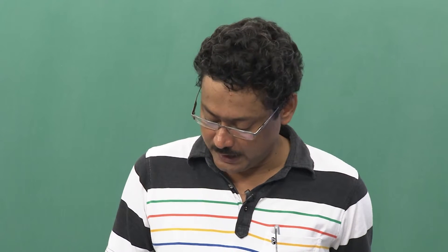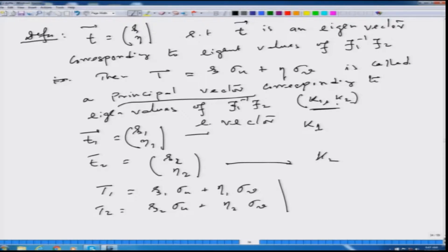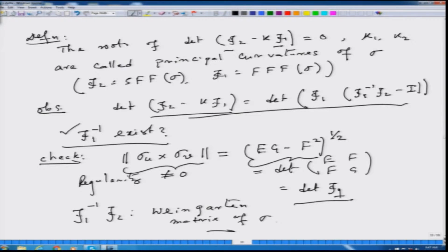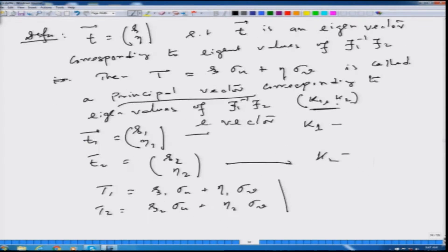Let us continue where we stopped in the last lecture. We have defined the principal vectors and the principal curvature. Remember k1 and k2 — these were the roots. They are called the principal curvatures, the roots of the matrix, and these are basically the eigenvalues of the Weingarten matrix. That is what we derived, and with that we defined the principal vectors. What do we do with these quantities? I want to do some more propositions today, and then you will see the geometric interpretation of all these quantities.